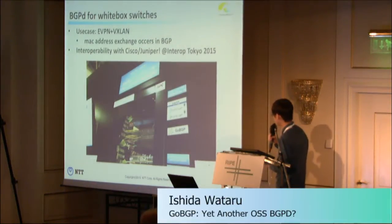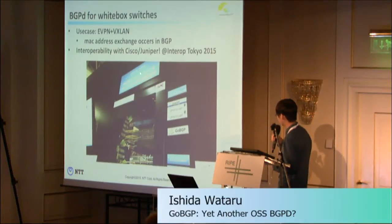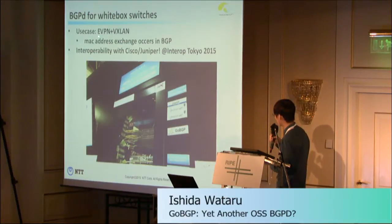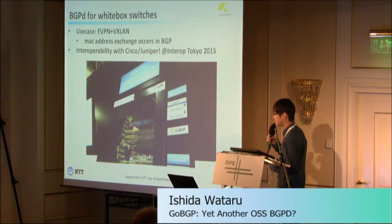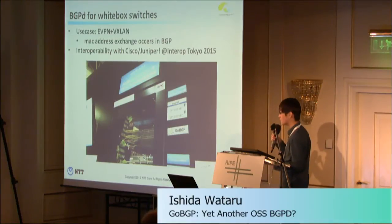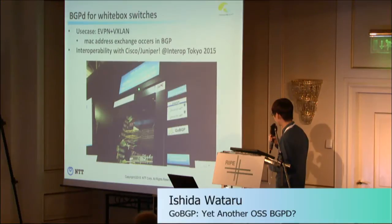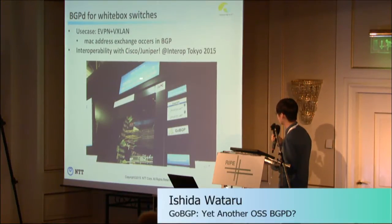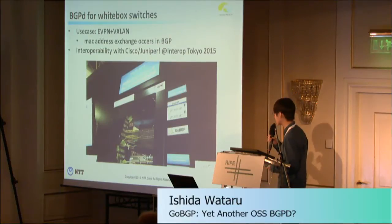One key use case is eVPN plus VXLAN. MAC address exchange occurs via BGP, and we have already verified interoperability with Cisco and Juniper boxes at Interop Tokyo this year, using Cumulus Linux and Quanta white-box switches for this interoperability check.